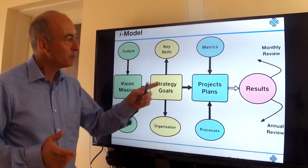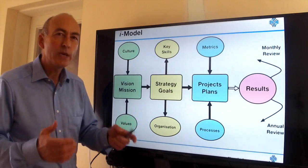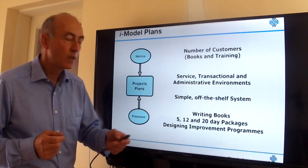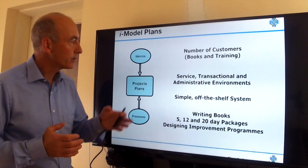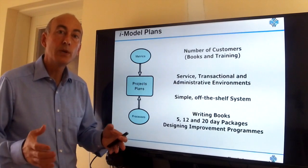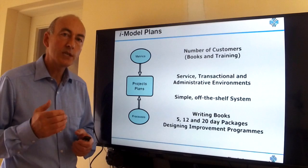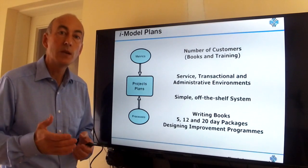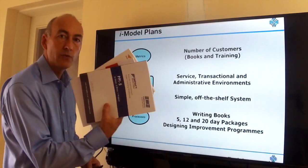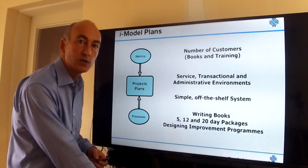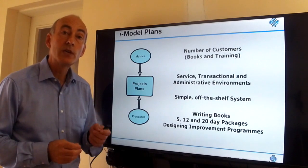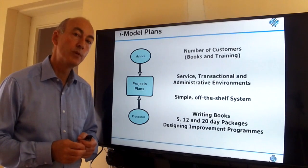Let's move on and look at the blue segment of the model — this is really what we're doing to put all of this into practice. We are trying to connect with service, transactional, and administrative environments to help all the people who work in the modern office build a culture of continuous improvement. Aside from working with organizations directly, we're also working on a simple off-the-shelf system — so far I've written eight training books and guides, with associated slides and materials, and I'm working on the next book focused on leadership and implementing continuous improvement.